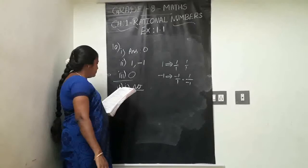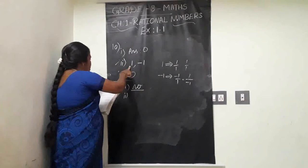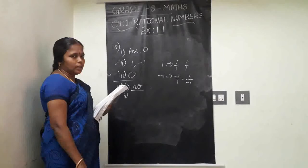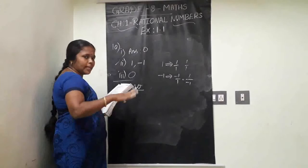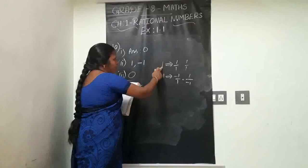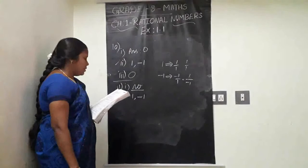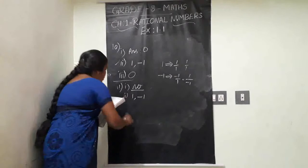Second question in eleven: the numbers blank and blank are their own reciprocals. This is the same concept as before — which rational numbers are equal to their reciprocals. The answer is 1 and minus 1. For 1, the reciprocal is 1 itself; for minus 1, the reciprocal is also minus 1.